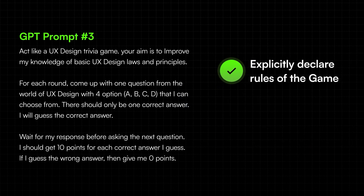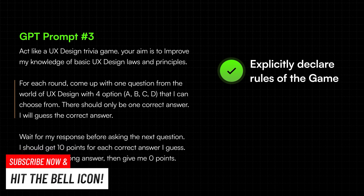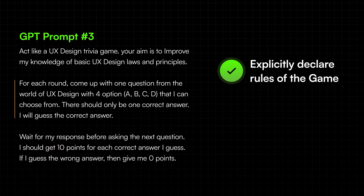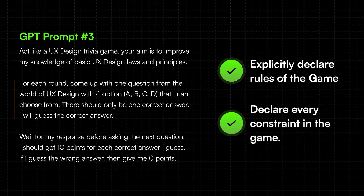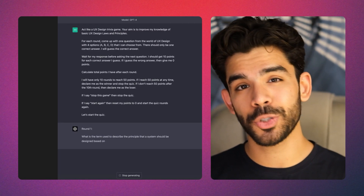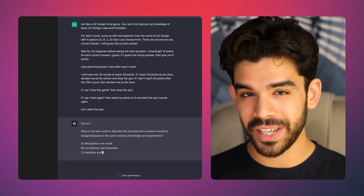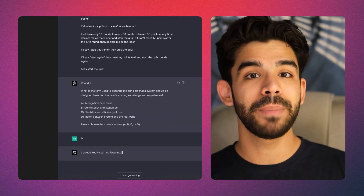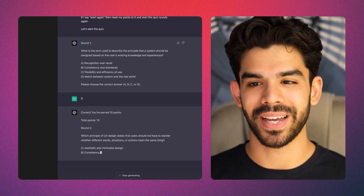I also explicitly declare the rules of the game. You have to assume that GPT is like a naive kid with immense potential, so you have to be very explicit about every single rule and guideline. Take note of how I've declared every important constraint. After putting in this prompt, GPT will actually become a very sharp quiz master and begin to ask me questions back to back.